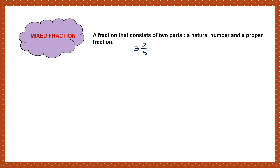Let's take another example. I can say 5, 7 by 12. Here also, I have a natural number and a fraction which is a proper fraction. It should be a proper fraction where the numerator is smaller than the denominator. Such a fraction is called a mixed fraction.